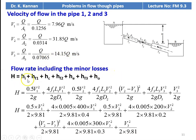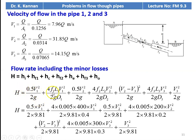For flow rate including minor losses, the head loss equation is H = Hi + Hf1 + Hc + Hf2 + He + Hf3 + Ho. Hi and Hc are minor losses at inlet and contraction; He and Ho are enlargement and outlet losses; Hf1, Hf2, Hf3 are the major friction losses in pipes 1, 2, and 3. Substituting equations: H = 0.5V1²/2g + 4F1L1V1²/2gD1 + 0.5V2²/2g + 4F2L2V2²/2gD2 + (V2-V3)²/2g + 4F3L3V3²/2gD3 + V3²/2g.